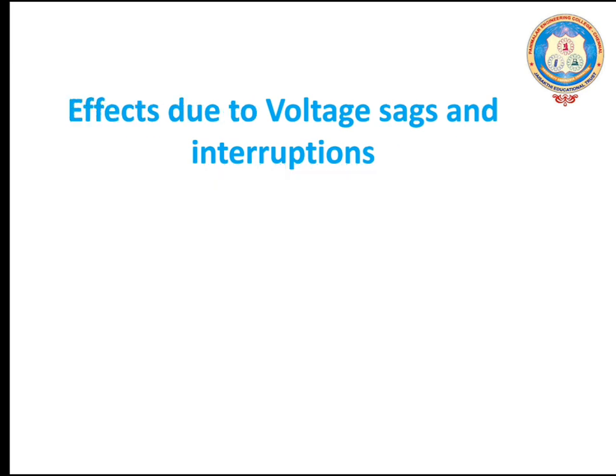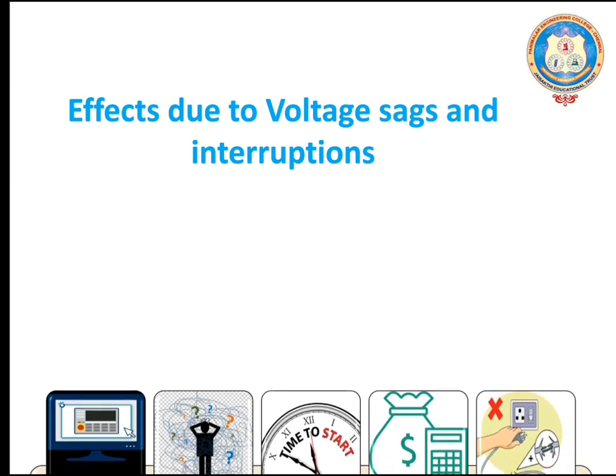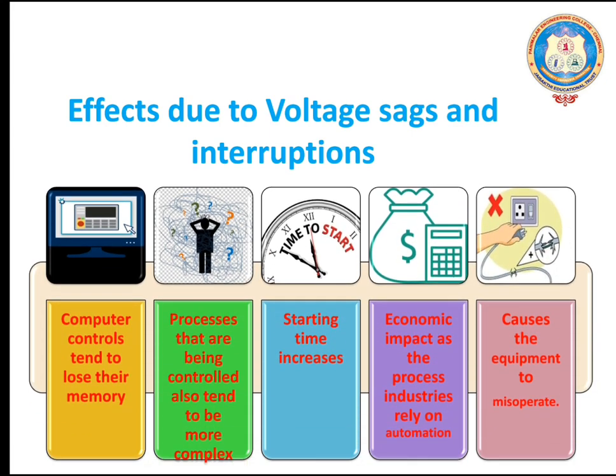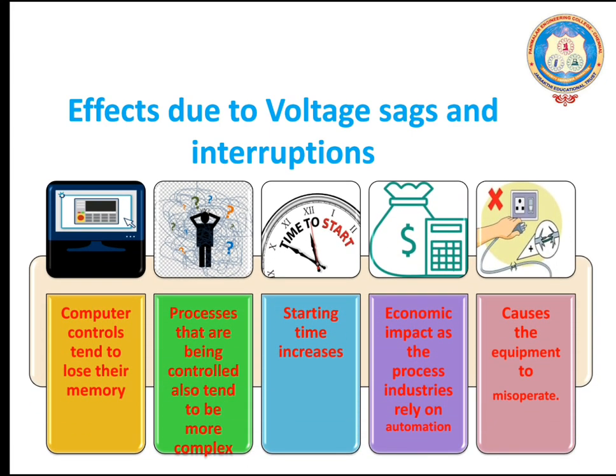What are the effects due to voltage sags and interruptions? The computer controls tend to lose their memory. Processes that are being controlled also tend to be more complex. The starting time will increase. Economic impact as the process industries rely on automation, causing the equipment to misoperate.